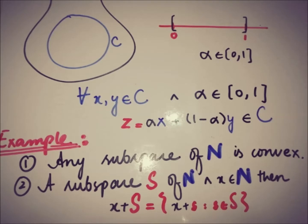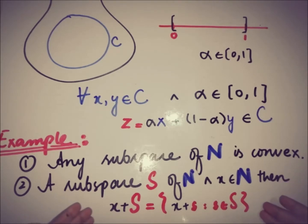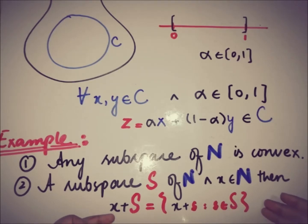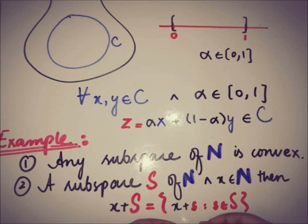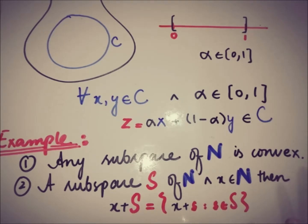Moving toward the second example: any subspace S of a linear space N — if we take any random element of the linear space N and form a set by adding that random element to every element of the subspace — then this resulting set is also a convex set. The proof is left as an exercise for you.